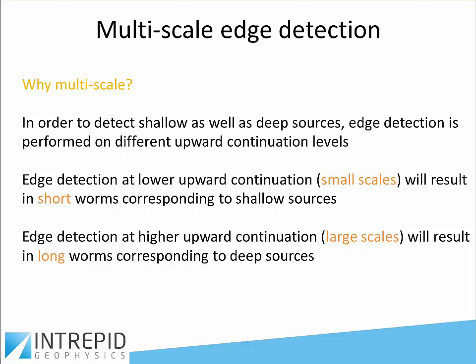So why do we call this process multi-scale? In order to select shallow as well as deep sources, edge detection is performed on different upward continuation levels. Edge detection at lower levels shows the short worms corresponding to shallow sources, and edge detection at higher upward continuation levels results in longer worms corresponding to deeper sources. We are transforming our data using different scales.